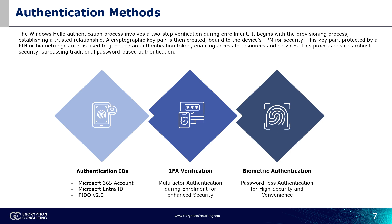Now let's look at different authentication methods available for Windows Hello. The authentication procedure involves a two-step verification process during enrollment. The provisioning process establishes a trusted relationship, creating a cryptographic key pair tied to the device's TPM for security. This key pair, protected by a PIN or biometric gesture, generates an authentication token for accessing resources and services.